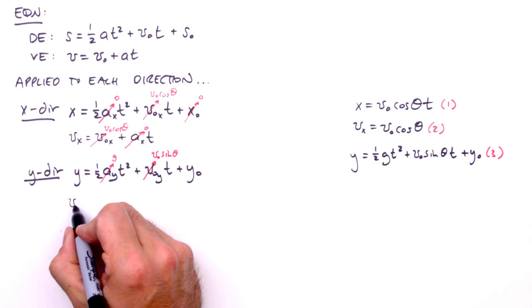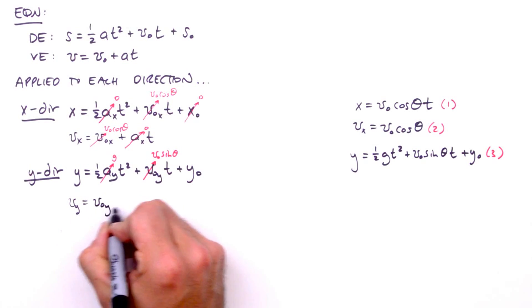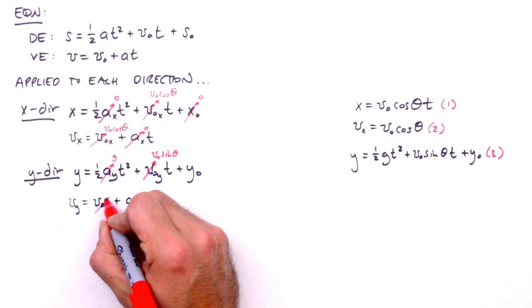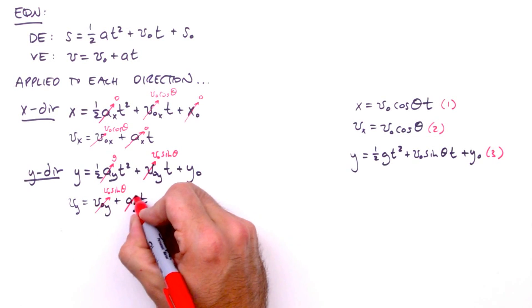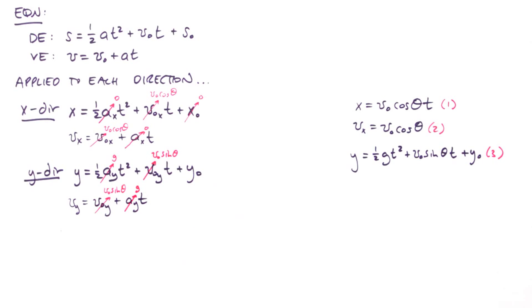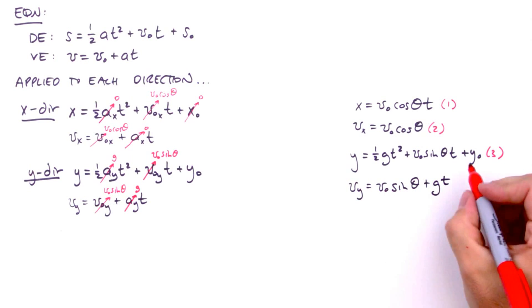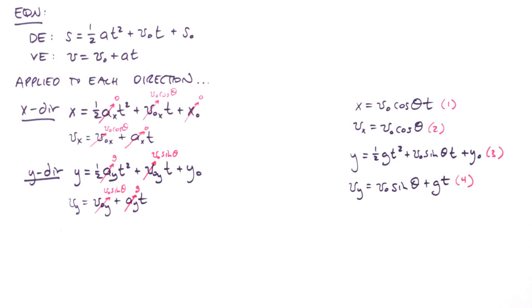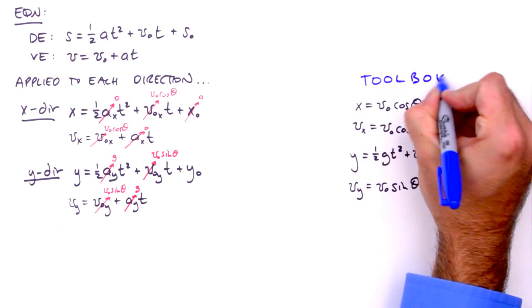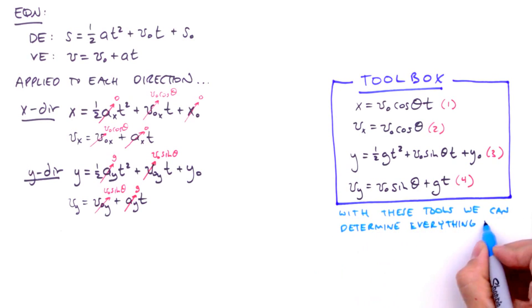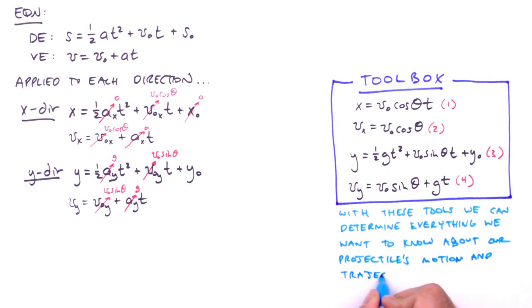The velocity equation in the y direction is v sub y equals v sub o sub y plus a sub y times t. Again, v sub o sub y was defined as v sub o sine theta and a sub y is just g. So, our fourth and final equation is v sub y equals v sub o sine theta plus g t. These four equations now constitute what we call our toolbox. Every handyman knows you got to have the right tools for the right job. The same goes for projectile motion. Simplifying the displacement and velocity equations for each direction is selecting the right tools. And with these tools, we can determine everything we want to know about our projectile's motion and trajectory.